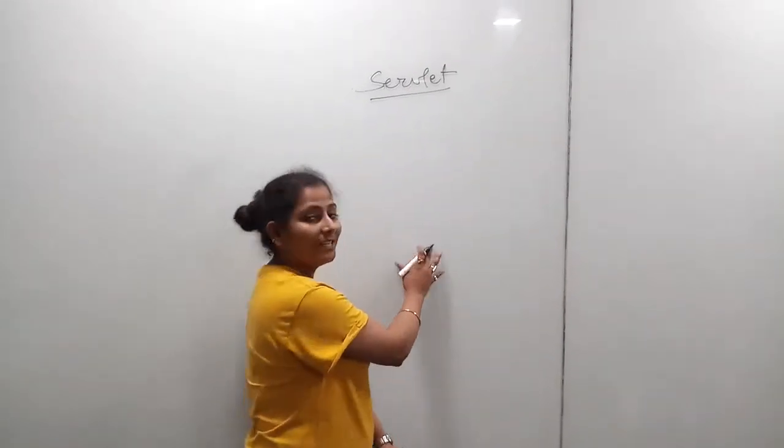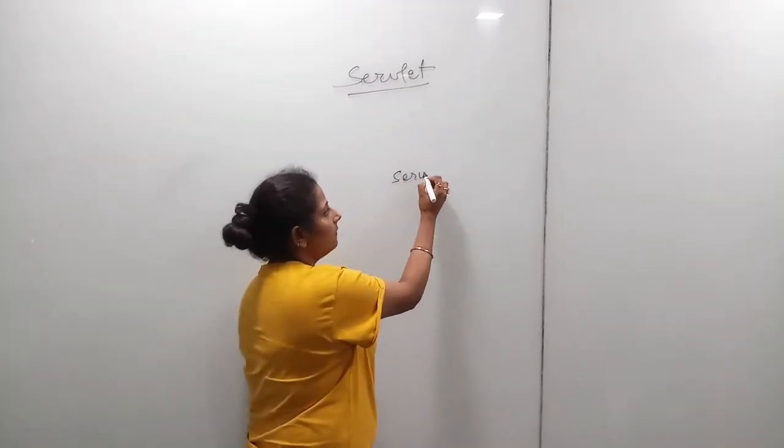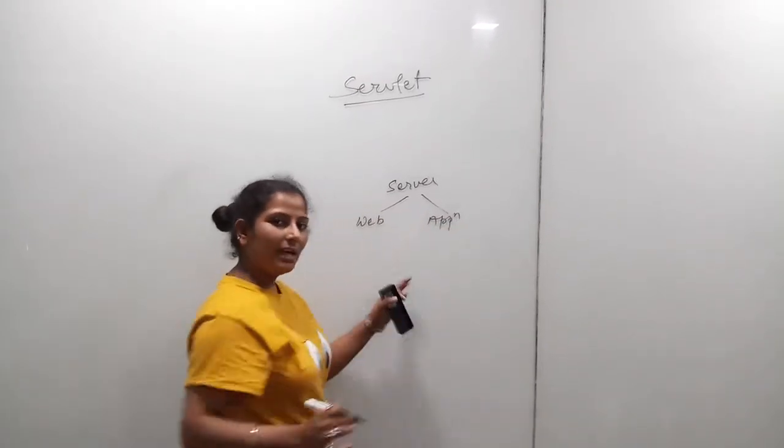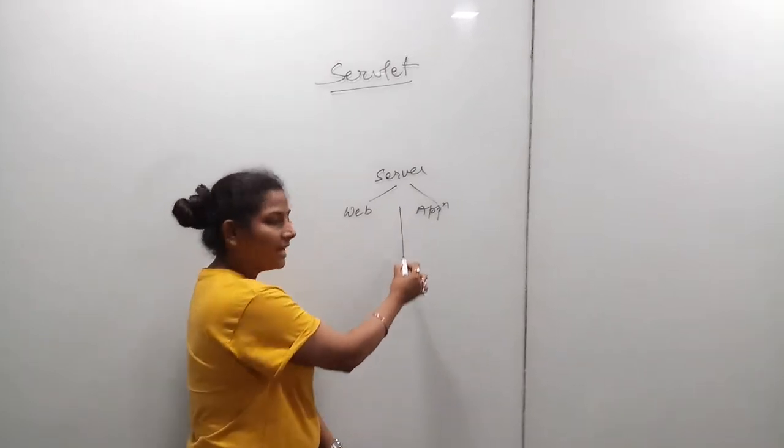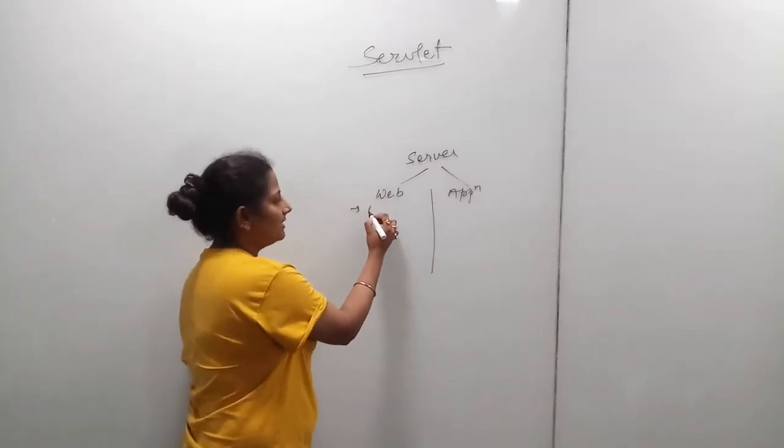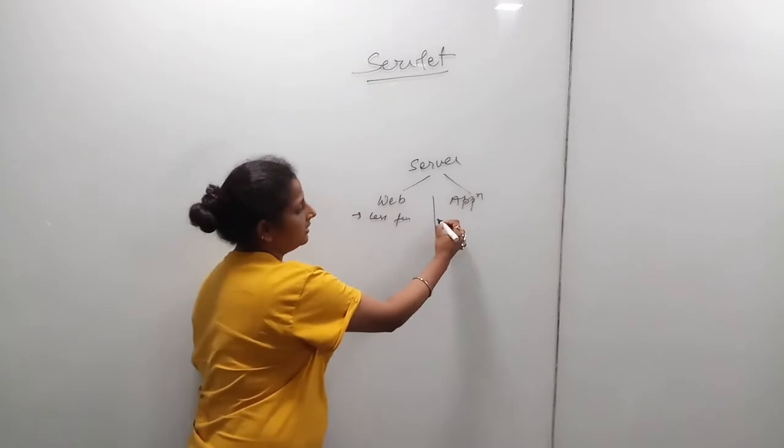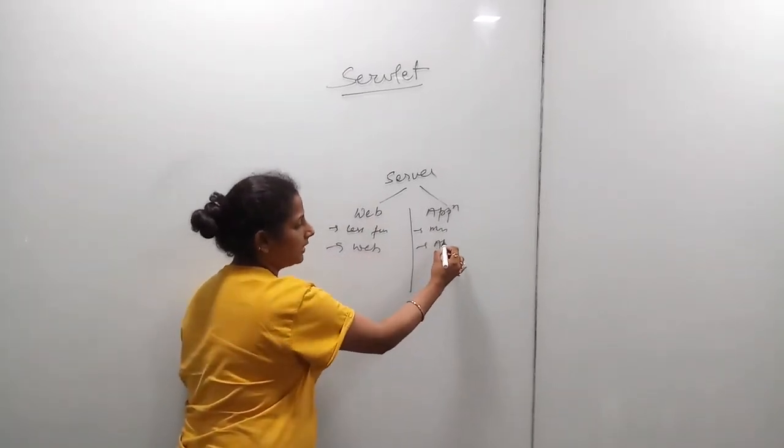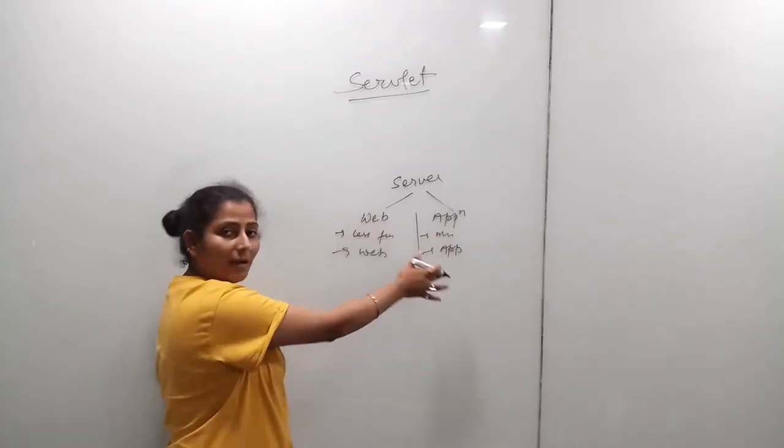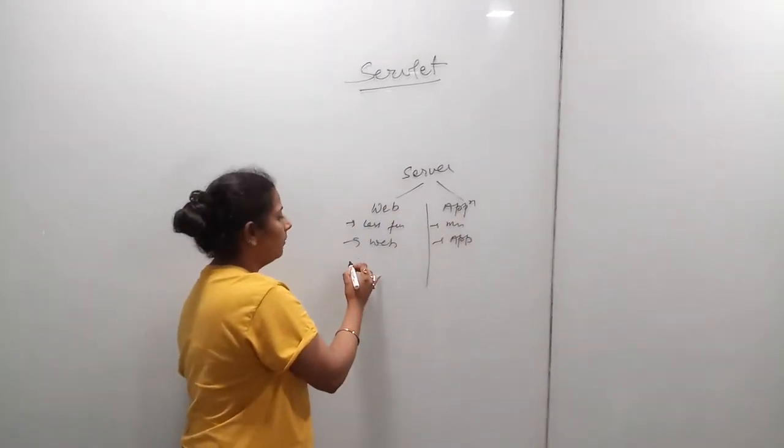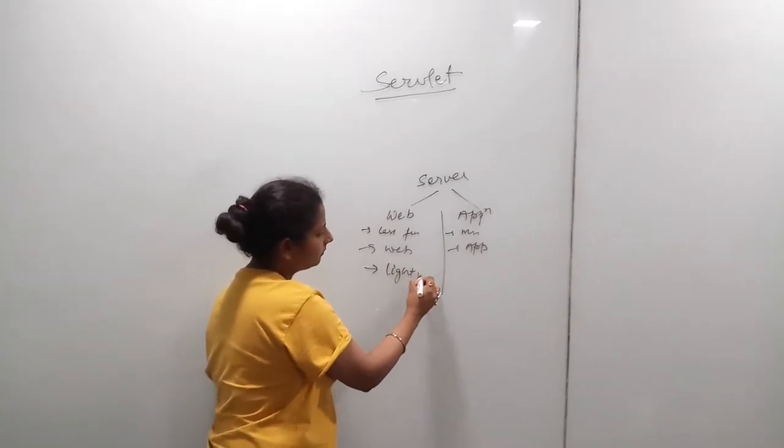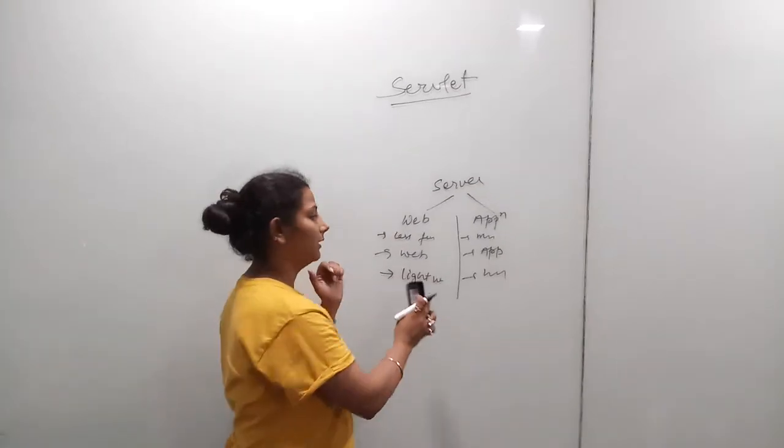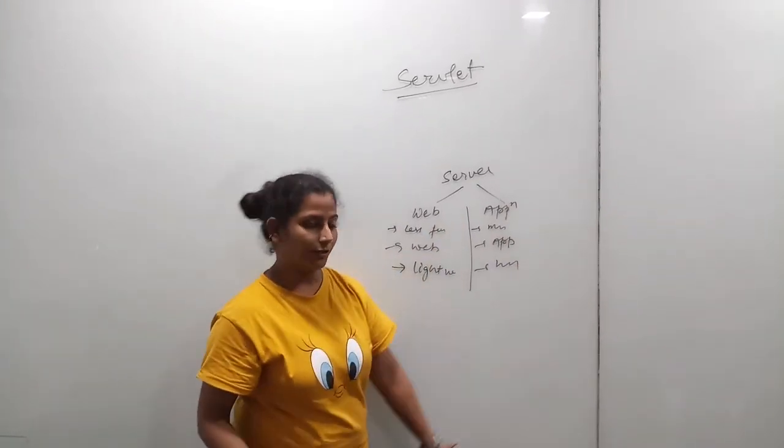Now we have seen web server already, but for the server we have two types: web server and application server. Basically they are the same, but there is a very thin line difference between them. Web server has less features and application server has more features than this. Web server is used for web development, application server is used for application development plus it can be used for web development also. Web server is lightweight and application server is heavy. Lightweight is heavy in the sense of programming and coding. So that's all for web server and application server.